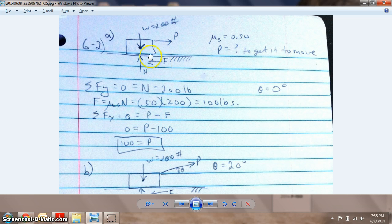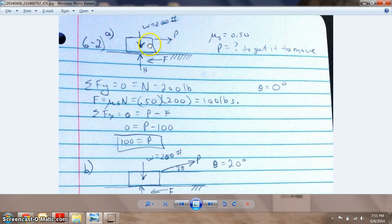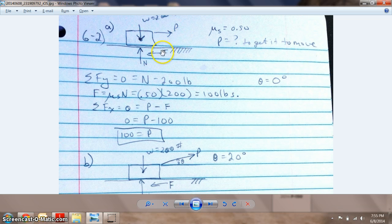That comes out to be 100 pounds. So the friction force acting against the pushing force or the load is 100 pounds. If we do a summation of forces, we find P is 100 pounds. So it's going to take 100 pounds of load to overcome this friction force to get this 200 pound weight to start moving.